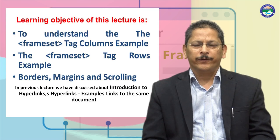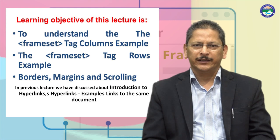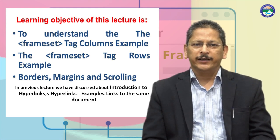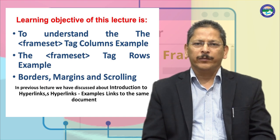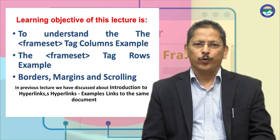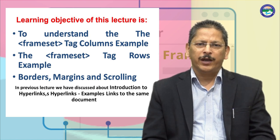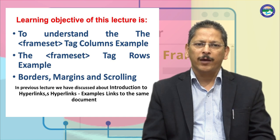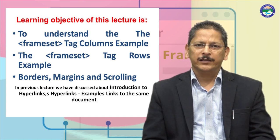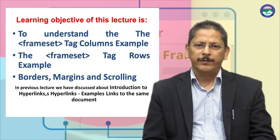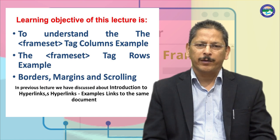The learning outcome of this lecture is to understand the frameset tag — column example, frameset tag rows example, border, margin, and scrolling. In the previous lecture we discussed about introduction to hyperlinks and hyperlinks example linked to the same document, among many other topics.